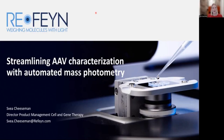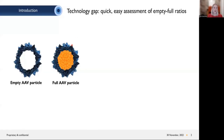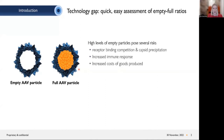Thank you very much for the kind introduction. As mentioned, today we want to speak about AAVs. When speaking about AAVs, we also need to speak about one of the biggest analytical challenges in manufacturing, which is to determine whether the AAV particles are empty or full — that is, whether or not they carry the transgene, the DNA inside. Manufacturing processes often lead to high amounts of empty AAV particles, which is harmful: it causes receptor binding competition and capsid precipitation, increased immune responses, and increased cost of goods.